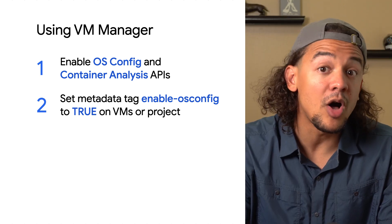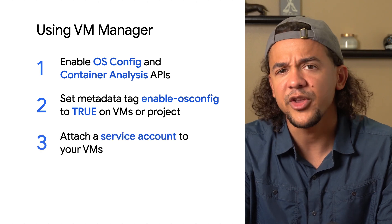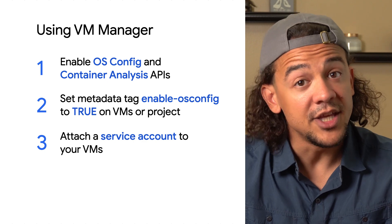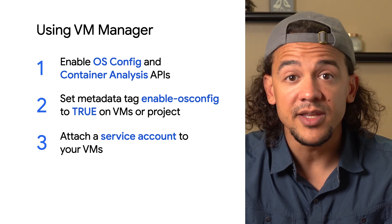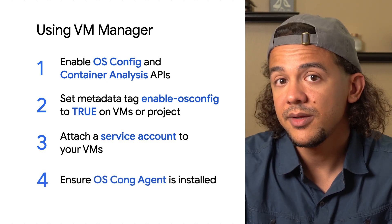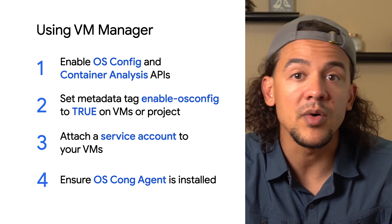Each VM will also have to have an attached service account — it'll be used to sign requests to the OS config API. And finally, each VM in your fleet is going to have to have the OS config agent installed. The good news is that this is already included on the latest OS images available. If it isn't installed on your machines, check out the documentation in the description below for steps on how to get it installed on each operating system.